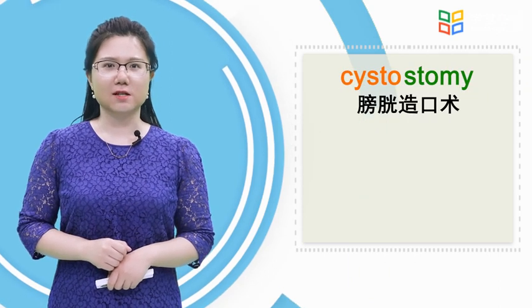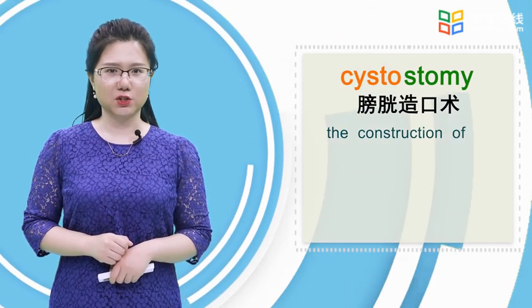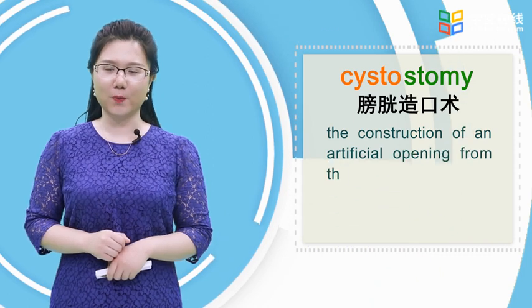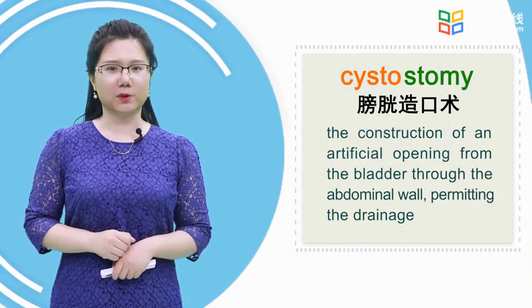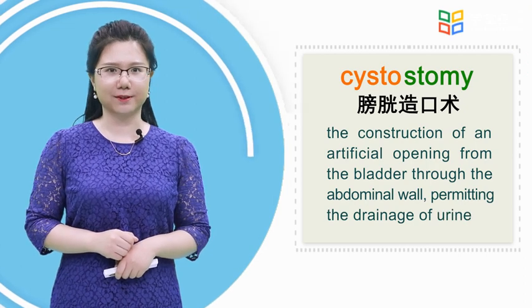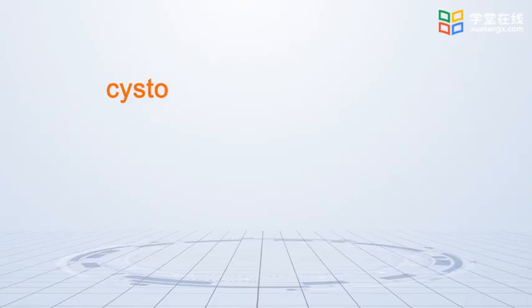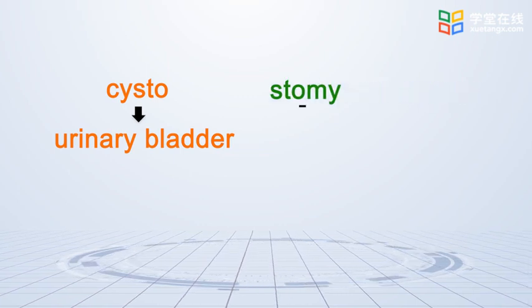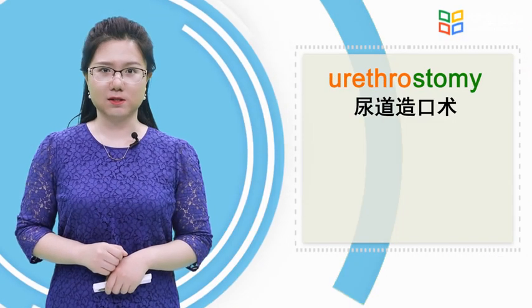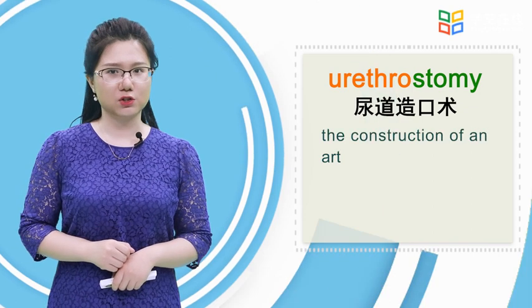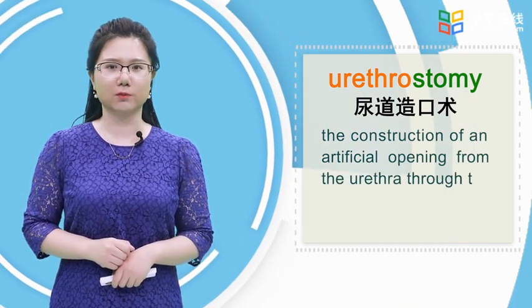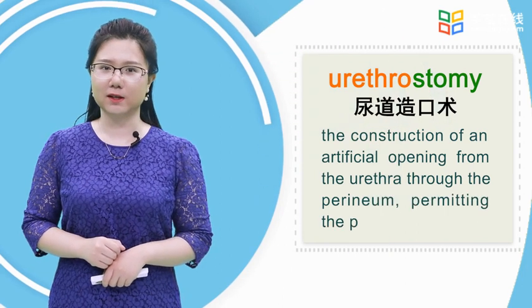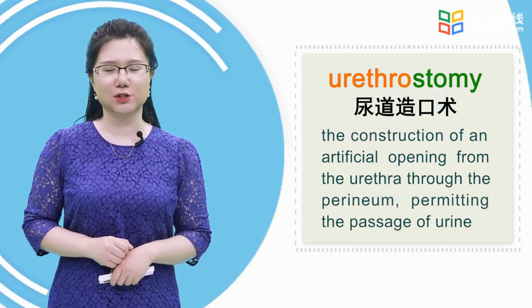Cystostomy is the construction of an artificial opening from the bladder through the abdominal wall, permitting the drainage of urine. Urethrostomy means the construction of an artificial opening from the urethra through the perineum, permitting the passage of urine.